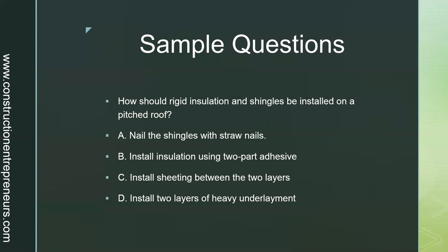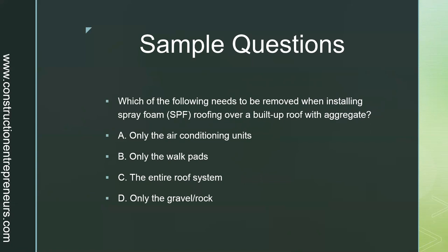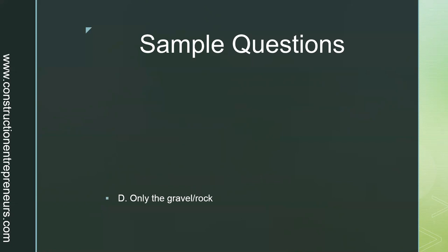Next sample question: how should rigid insulation and shingles be installed on a pitched roof? A. Nail the shingles with straw nails. B. Install insulation using two-part adhesive. C. Install sheeting between two layers. Or D. Install two layers of heavy underlayment? The answer is C — install sheeting between two layers. Next sample question: which of the following needs to be removed when installing spray foam SPF roofing over a built-up roof with aggregate? A. Only the air conditioning units. B. Only walk paths. C. The entire roof system. Or D. Only gravel/rock? The answer is D — only gravel/rock.